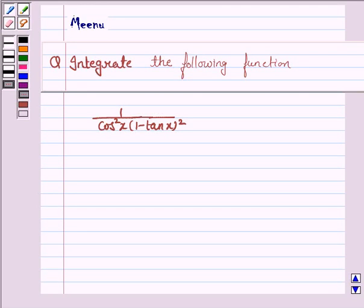Hello students, let's solve the following problem on integration. We have to integrate the function 1 upon cos square x into 1 minus tan x whole square.